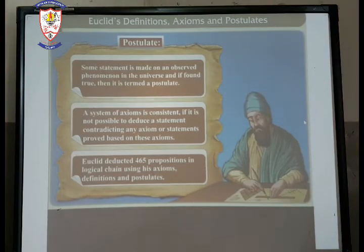Some statement is made on an observed phenomena in the universe and if found true then it is termed as postulate. A system of axioms is consistent if it is not possible to deduce a statement contradicting any axioms or statement proved based on these axioms. Euclid's deducted 465 propositions in logical chain using his axioms, definition and postulates.